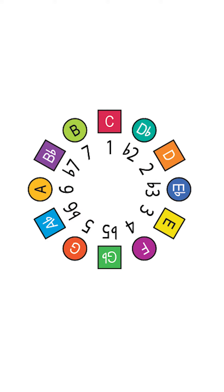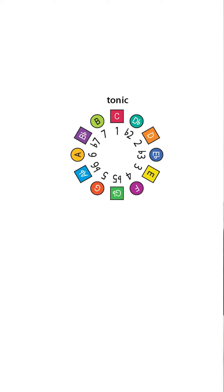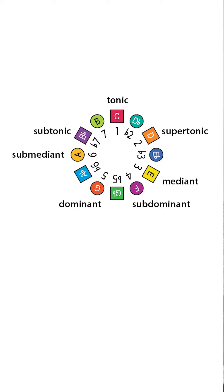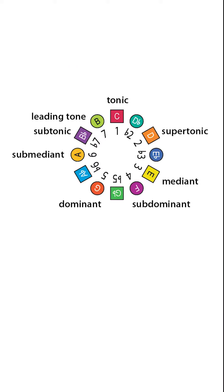But on top of these symbols, musicians also use other terms to reference the scale degrees, like tonic, supertonic, mediant, subdominant, dominant, submediant, subtonic, and leading tone. And though these terms can seem complicated or confusing, they're not when you know what they mean. So here's a quick explanation.